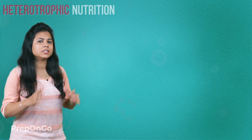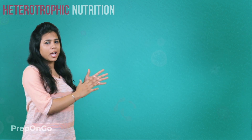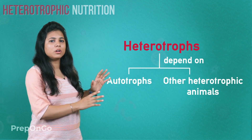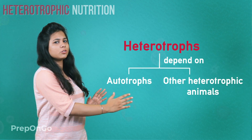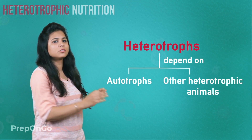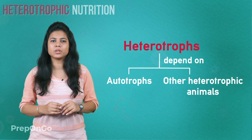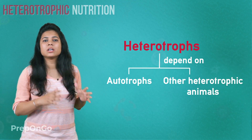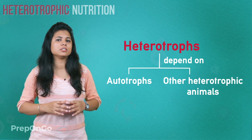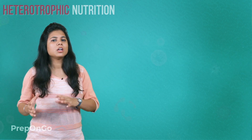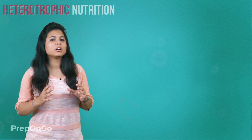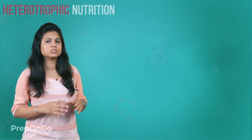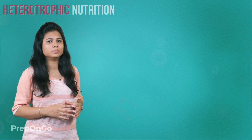We have seen that heterotrophic animals depend upon autotrophs and other heterotrophic animals for their food. Now these animals have different strategies to take in the food. Let's see what are the different strategies which are followed by these animals.